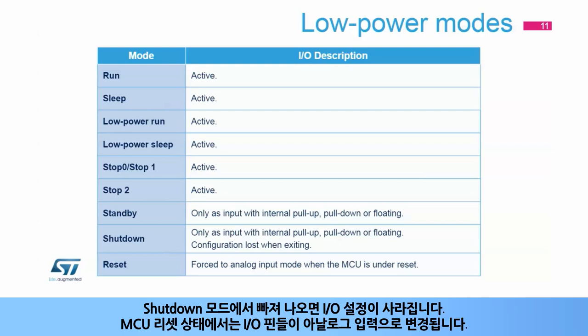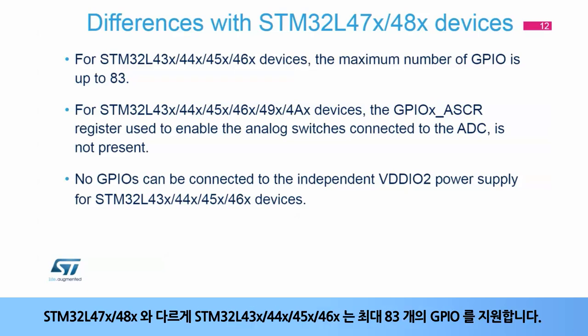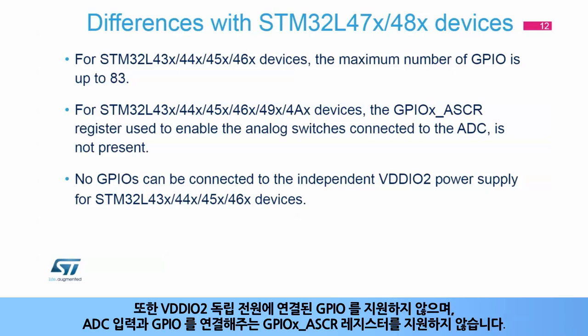This slide presents the key differences between baseline STM32L47X/48X devices and other devices. Compared to STM32L47X/48X devices, STM32L43X, 44X, 45X, and 46X devices have up to 83 GPIOs. They no longer have GPIOs connected to an independent power supply VDDIO2, and the GPIOX ASCR register enabling an analog switch connected to the ADC inputs is no longer present.